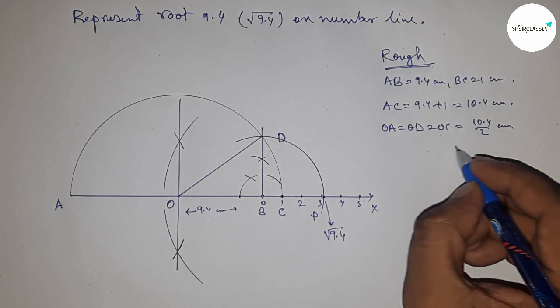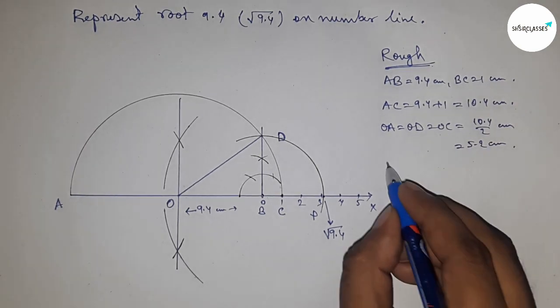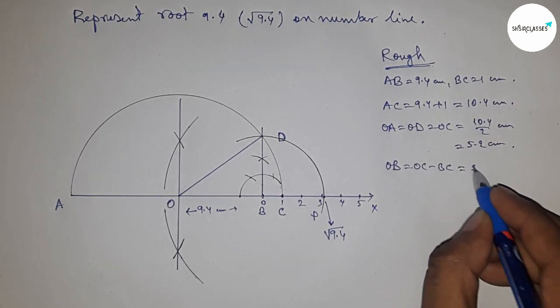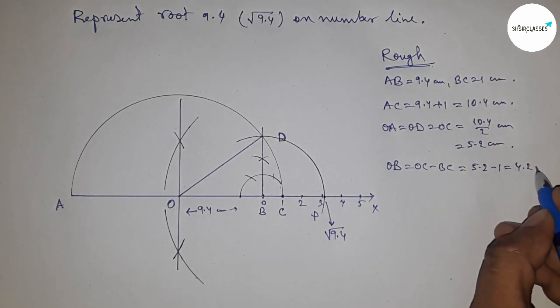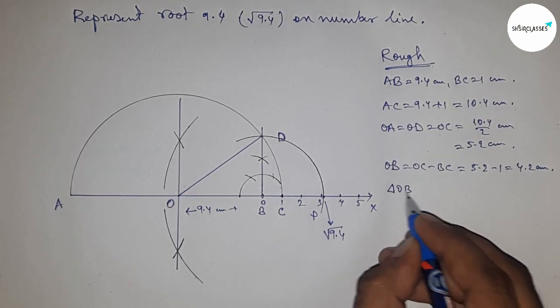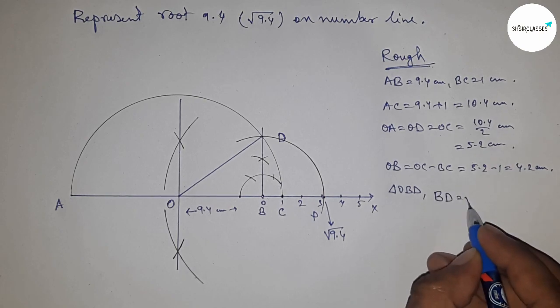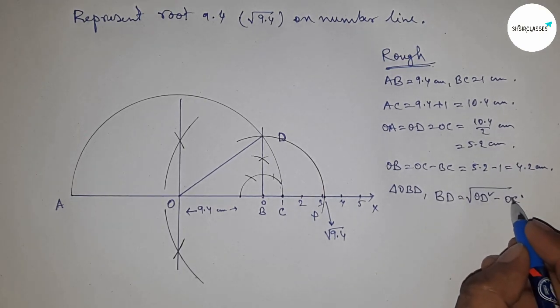Now OB equals OC minus BC, which is 5.2 minus 1, equals 4.2 centimeters. In right triangle OBD, BD equals the square root of OD squared minus OB squared.